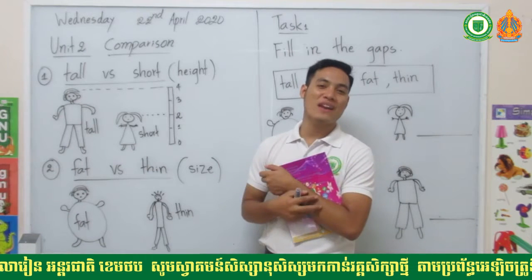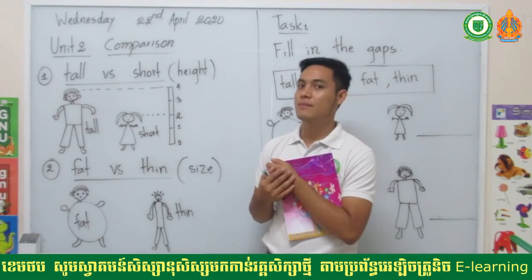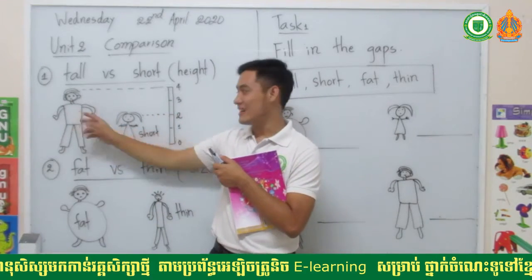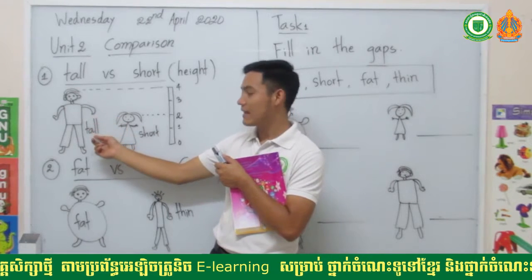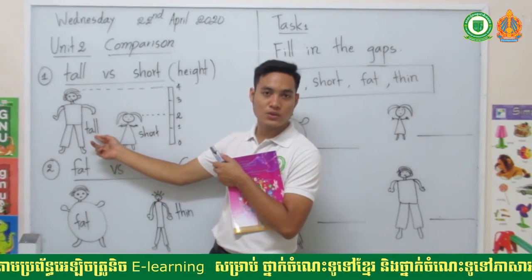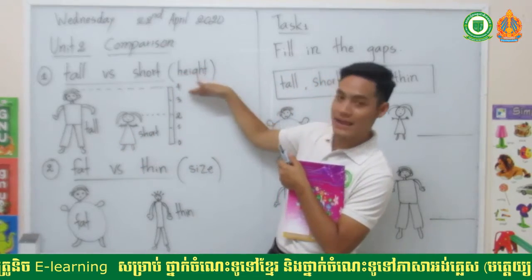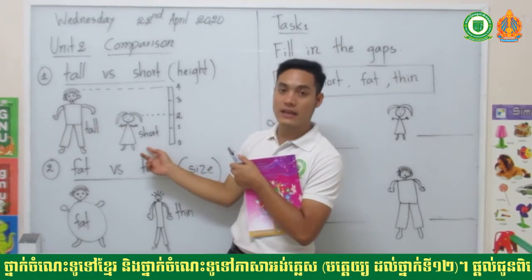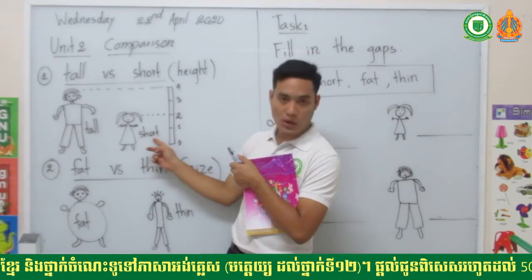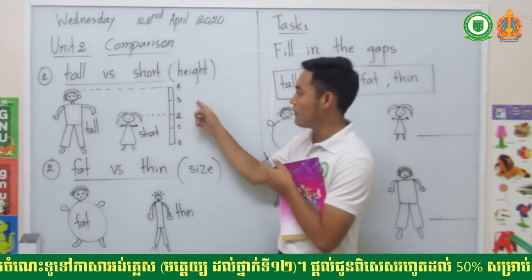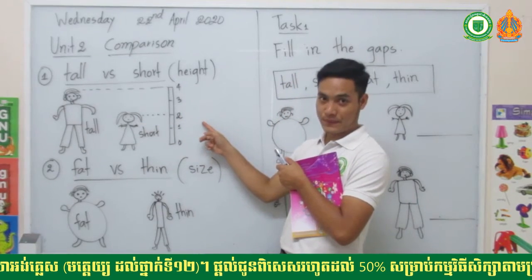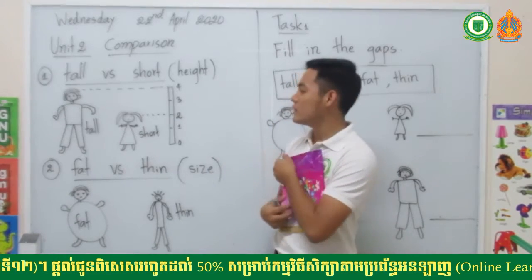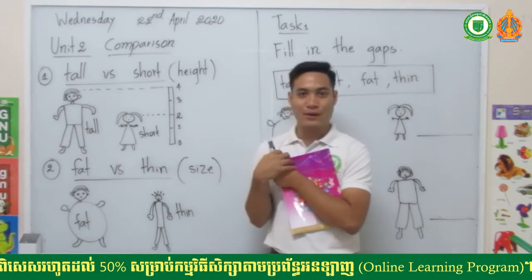Which one is tall and which one is short? The brother is tall because he has the rating number four. The sister is short because she has only the rating number two. That's all for tall versus short.